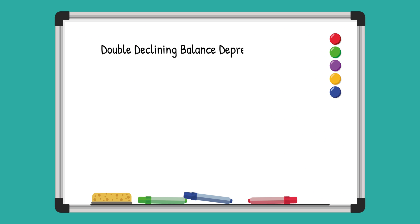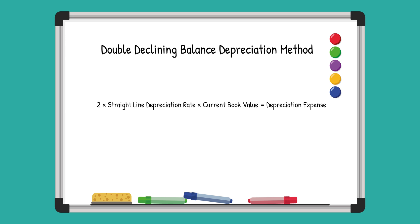Similar to the traditional declining balance method, the double declining balance is a good option for assets that depreciate significantly in the early stages of their useful life.